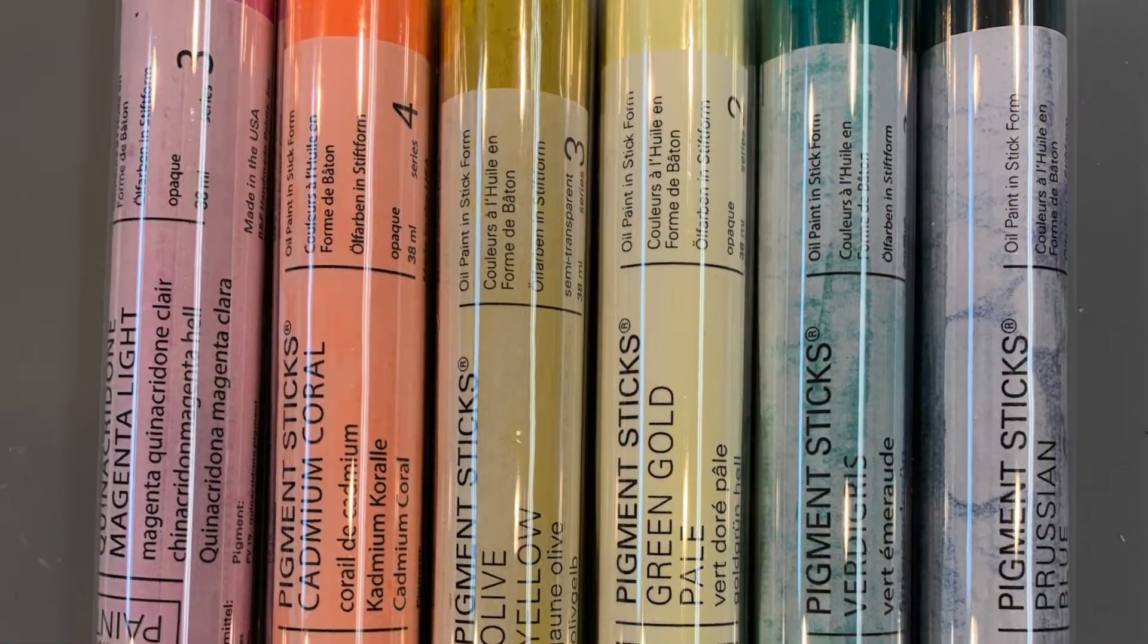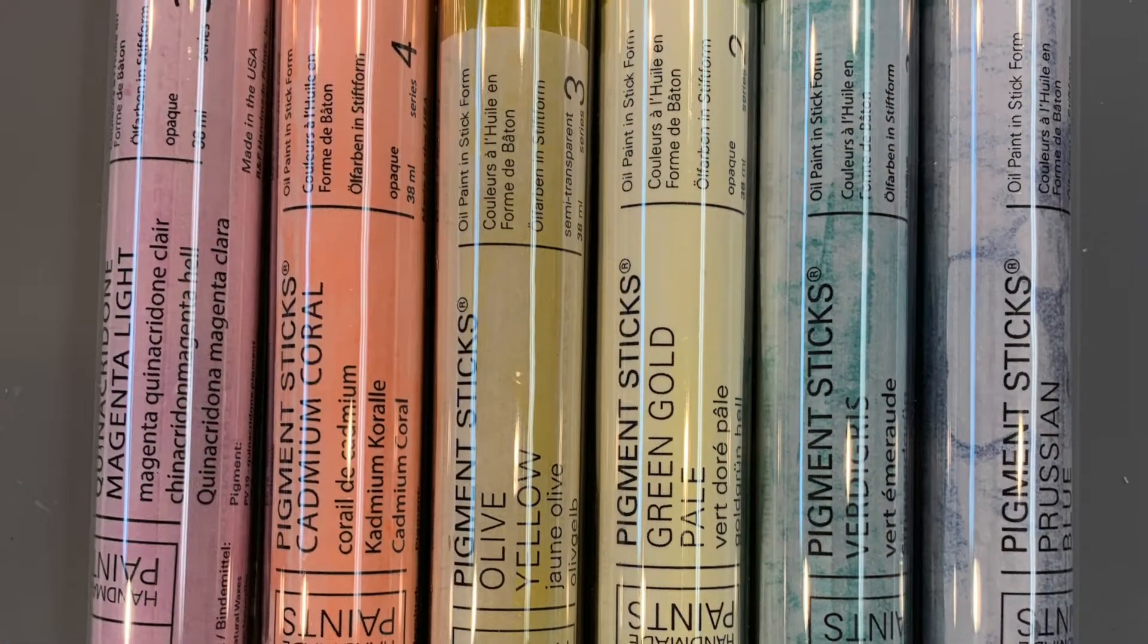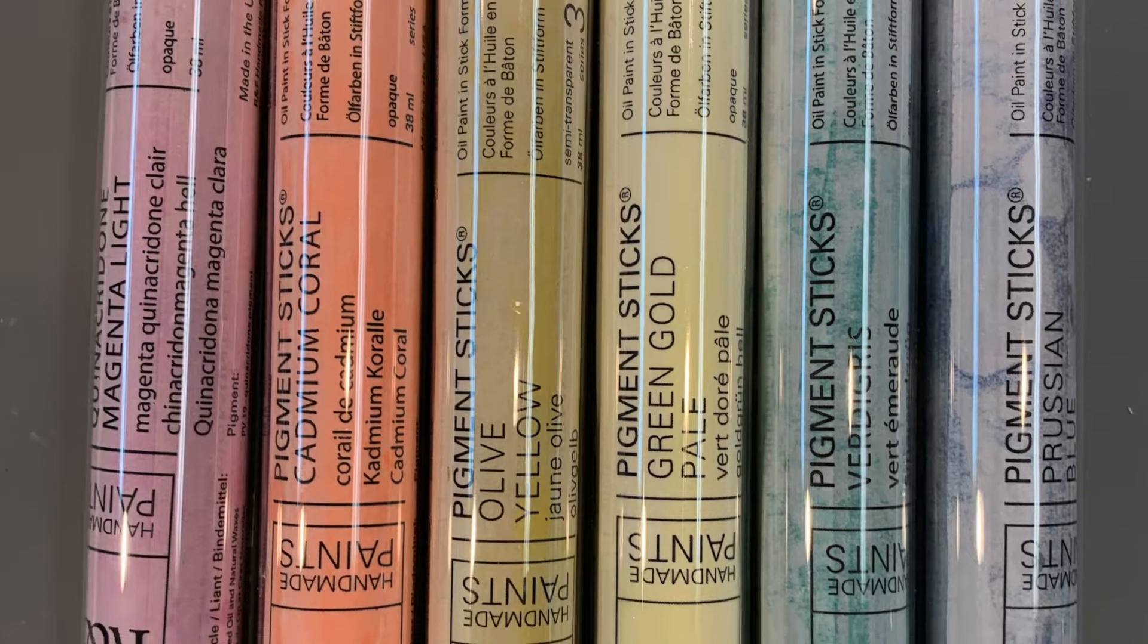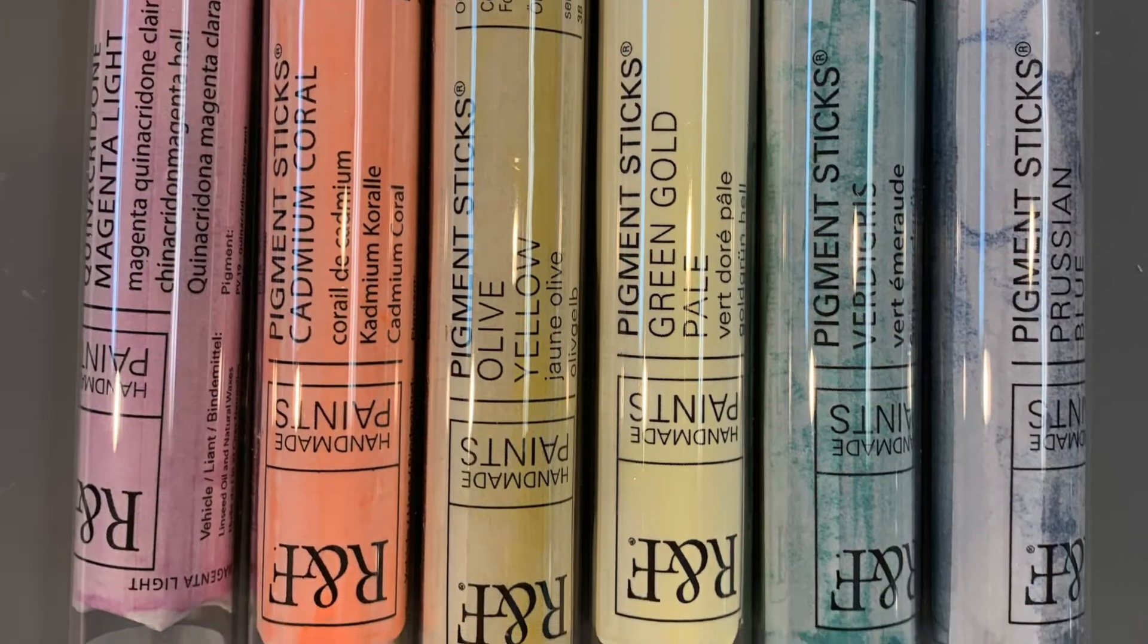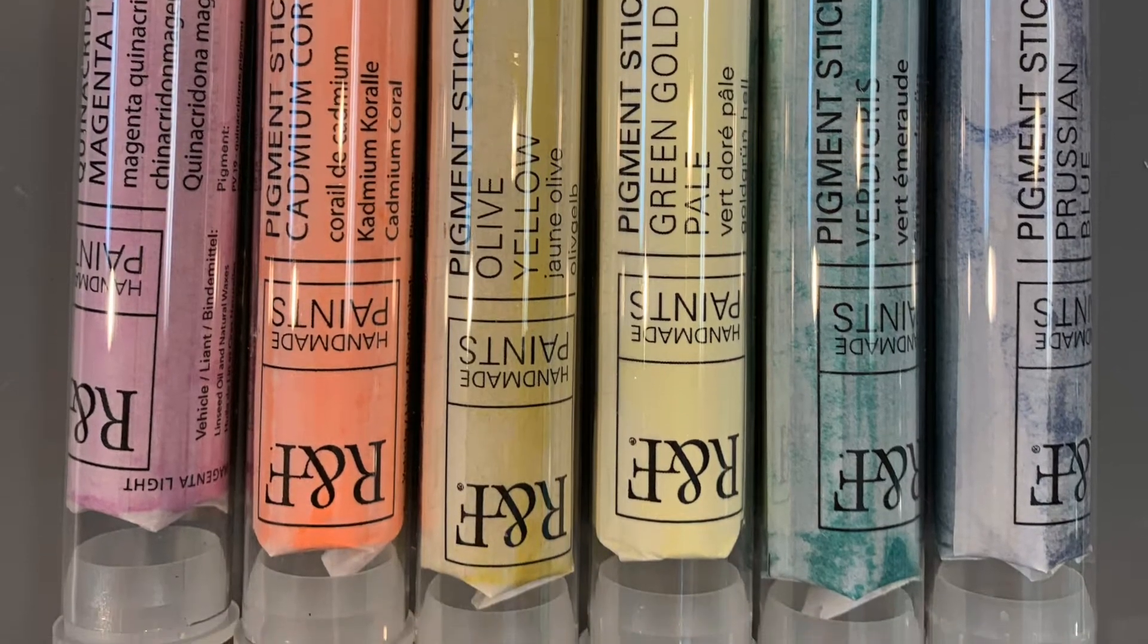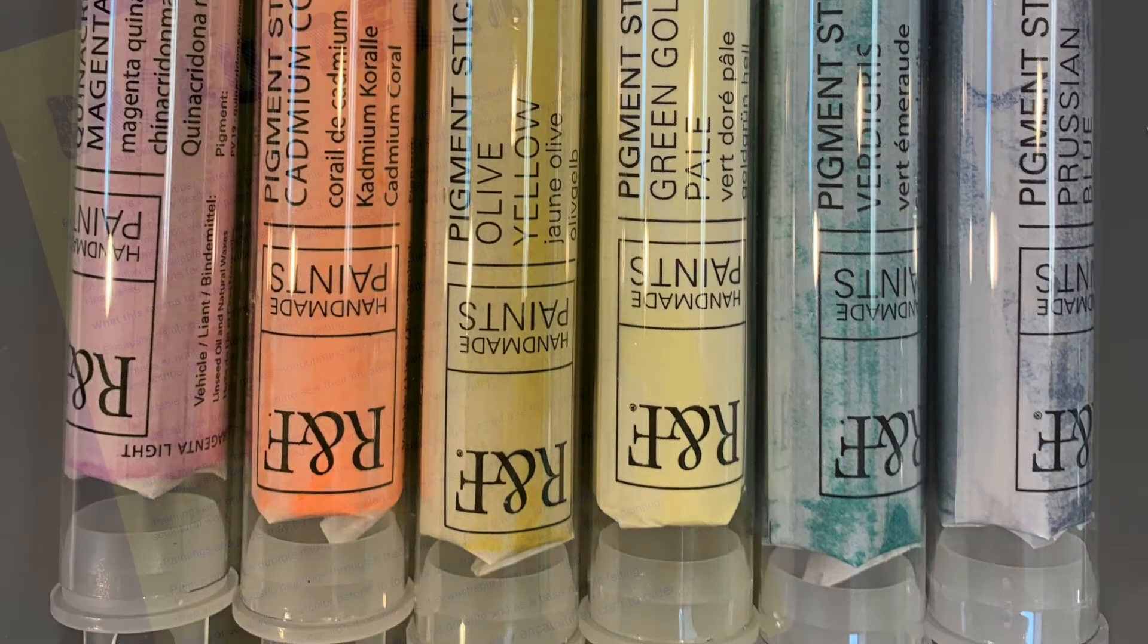Making monotype paintings on Encaustiflex allows me to use encaustic paint and pigment stick oil paints together fluidly. The bit of wax in the formulation of the pigment sticks allows this paint to be rolled out and used for printmaking techniques.